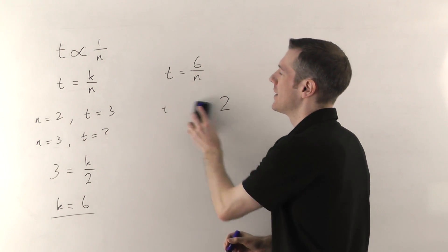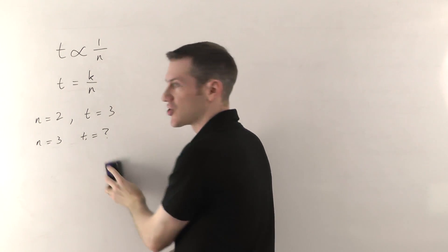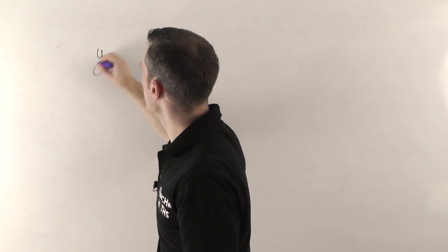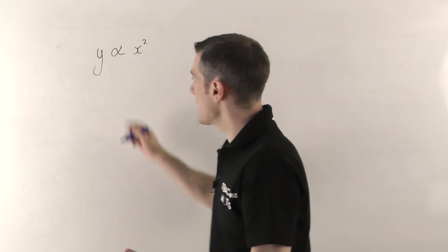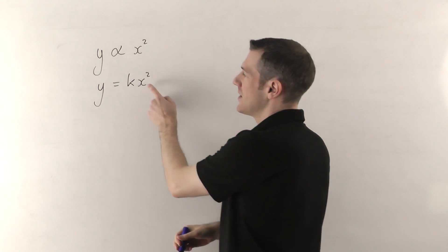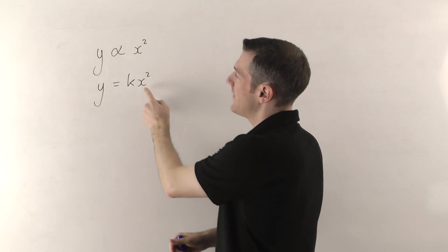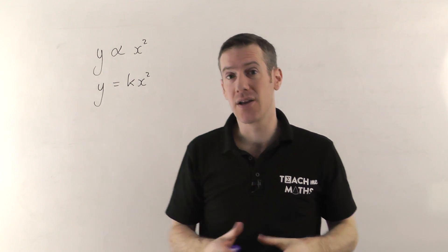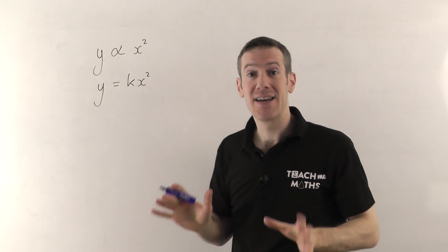One last thing: sometimes they say one thing is proportional not to another thing by itself, but to something squared, cubed, or any other combination. So if they tell you that y is proportional to x squared, you do exactly the same thing — replace the proportional sign with equals K times x squared. It's just that the other thing happens to be squared. If they give you values for x and y, you can still work out K the same way, and then answer the question exactly as before.